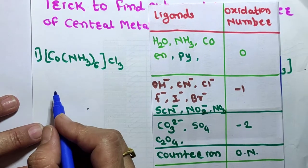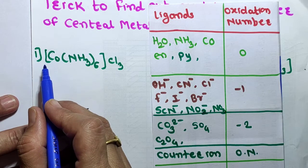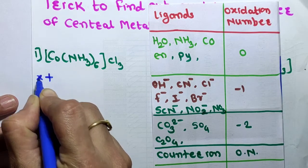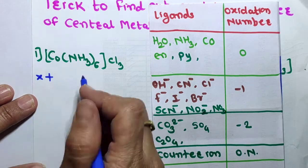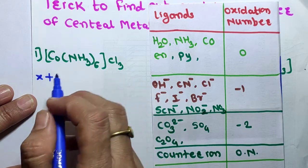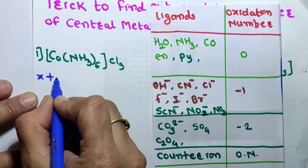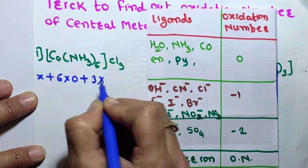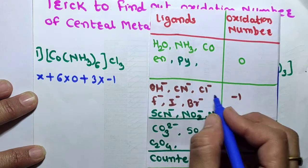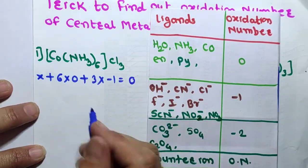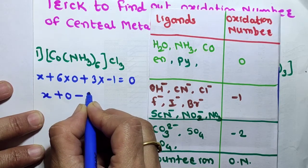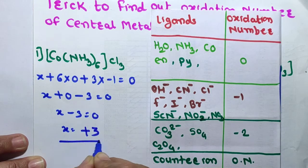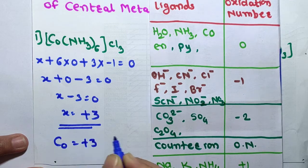First example: [Co(NH3)6]Cl3. Let the oxidation number of the central metal atom Co be X. Then: X + 6×(oxidation number of NH3) + 3×(oxidation number of Cl⁻) = 0. That is X + 6×0 + 3×(−1) = 0, so X − 3 = 0, therefore X = +3.